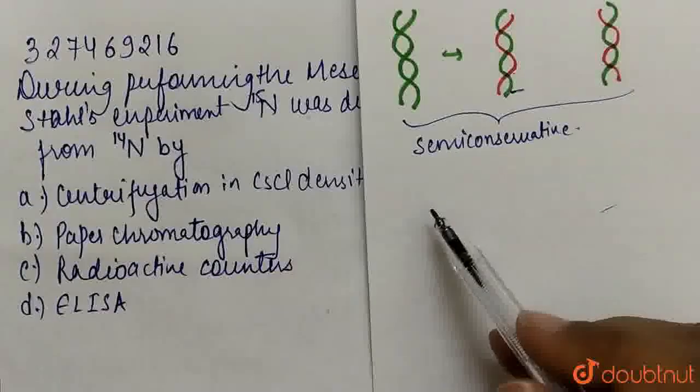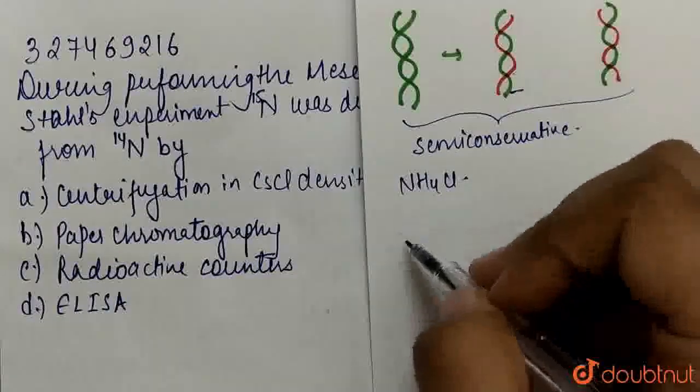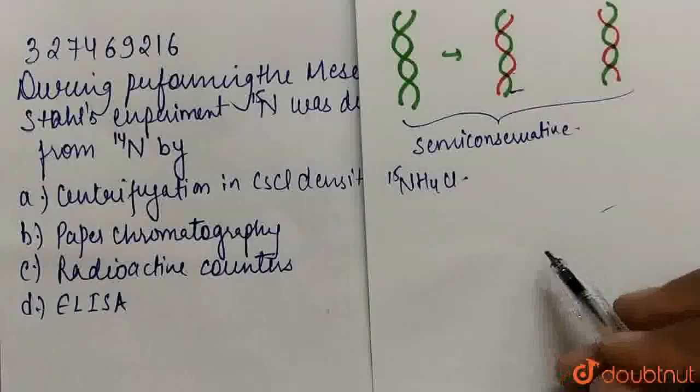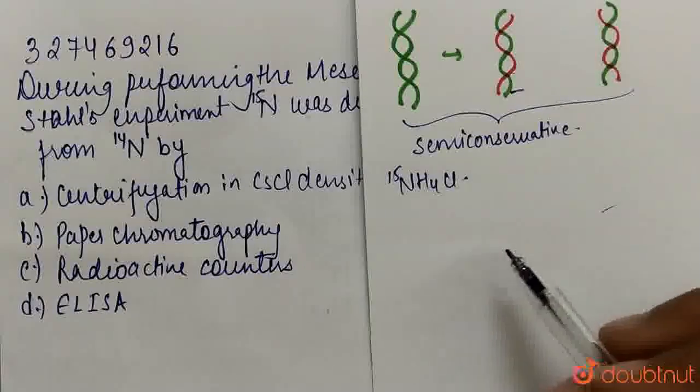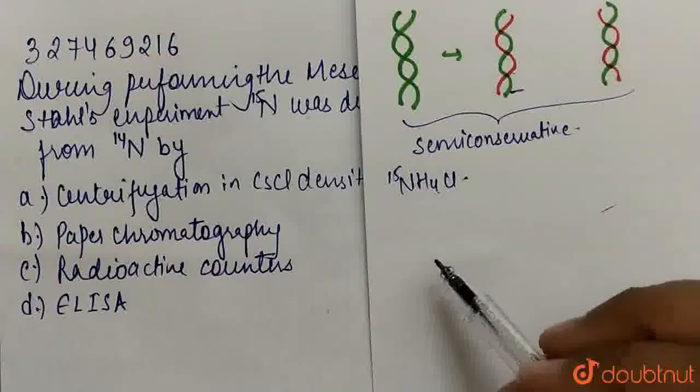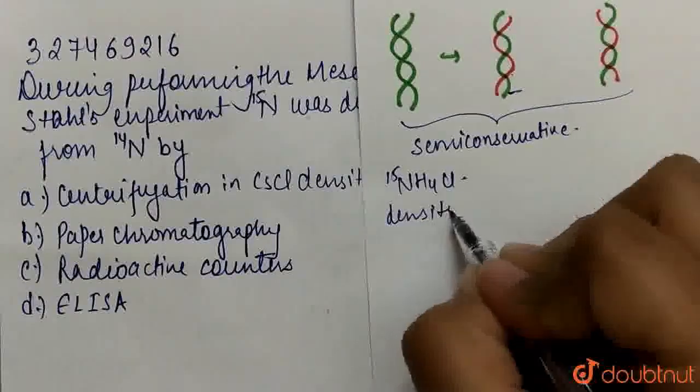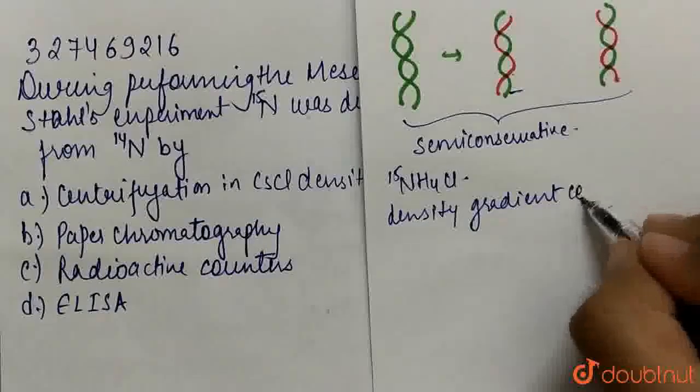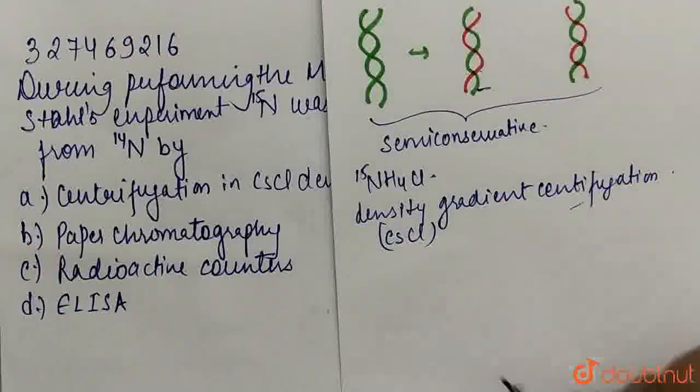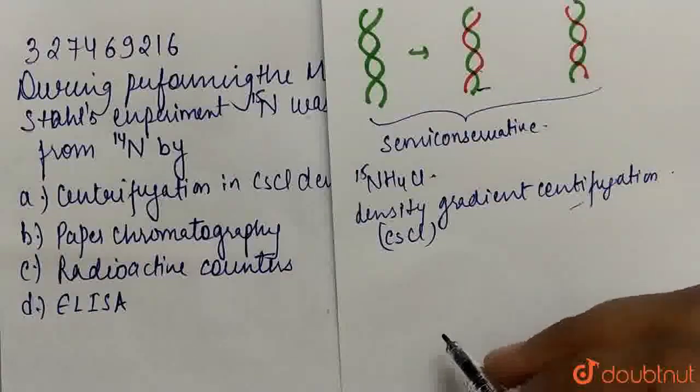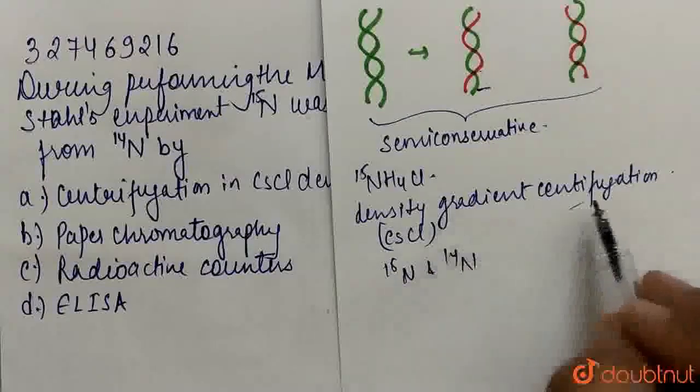Now in this Meselson and Stahl experiment, what happened was that E. coli were grown in ammonium chloride where nitrogen was heavy. N15 is the heavy isotope of nitrogen, and this was the nitrogen source for many generations. This is why N15 was incorporated into newly synthesized DNA. Now this heavy DNA molecule we can distinguish from normal DNA by density gradient centrifugation.